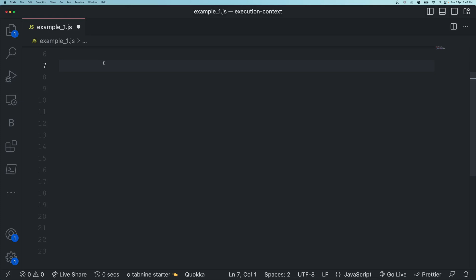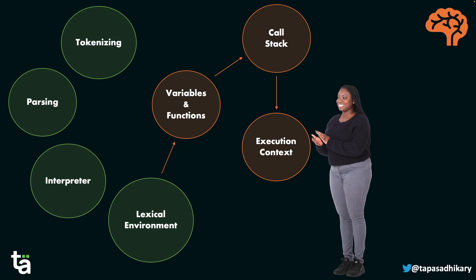We could start learning about JavaScript variables by writing code like `let name = someValue`, but we are not going to do it that way. You may remember the mental model from our previous video — we learned about tokenizing, parsing, interpreter, and lexical environment. Now we are learning about variables and functions, focusing specifically on variables today — learning how things work under the hood before getting into the syntax.